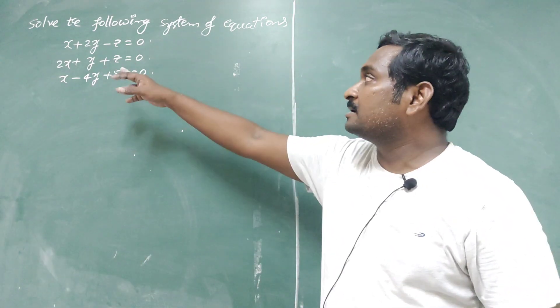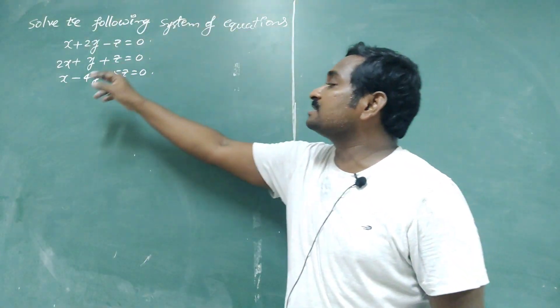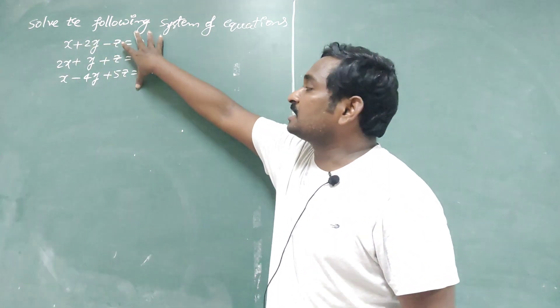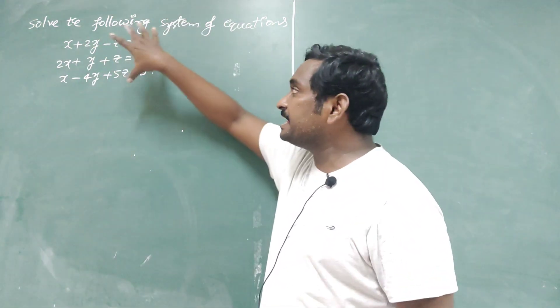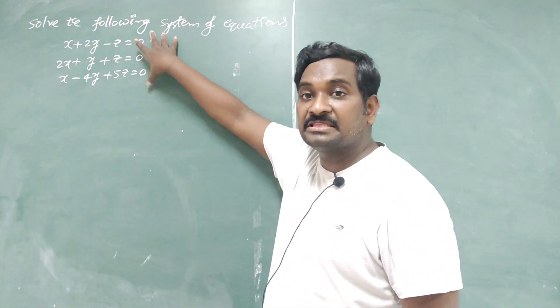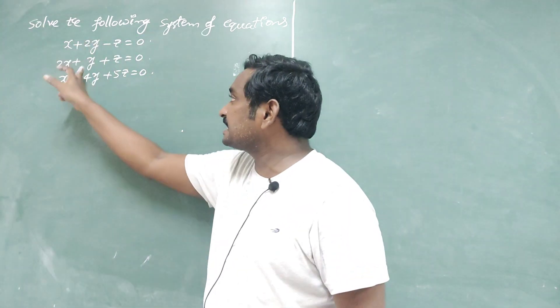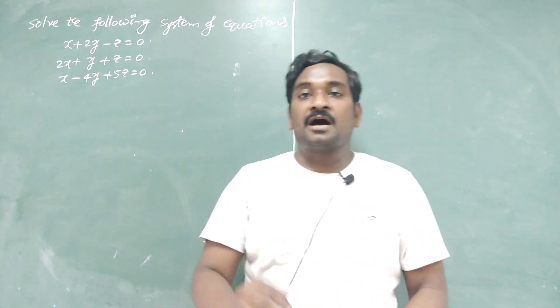See the statement: solve the following system of equations. These are the given system of equations. Clearly, three equations are given in the three variables x, y, z. This is the first equation, second equation, and third equation.